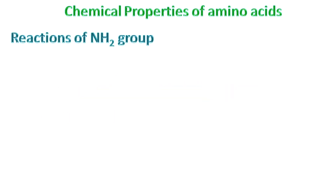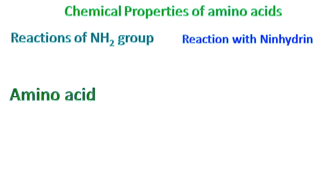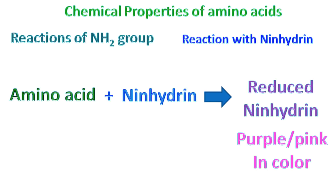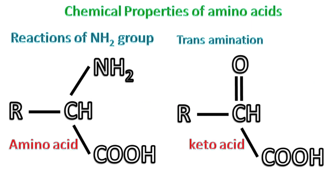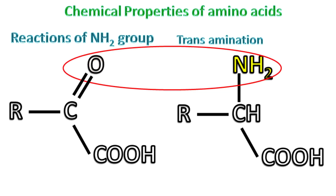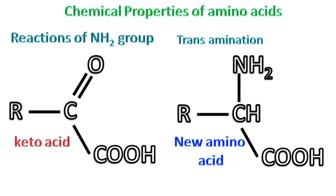Reactions of the amino group. Reaction with ninhydrin: amino acids can react with a reagent like ninhydrin and reduce ninhydrin, which appears purple or pink in color. Transamination reaction: in this reaction, the amino acid donates its amino group to a keto acid, which results in the conversion of the keto acid into a new amino acid.